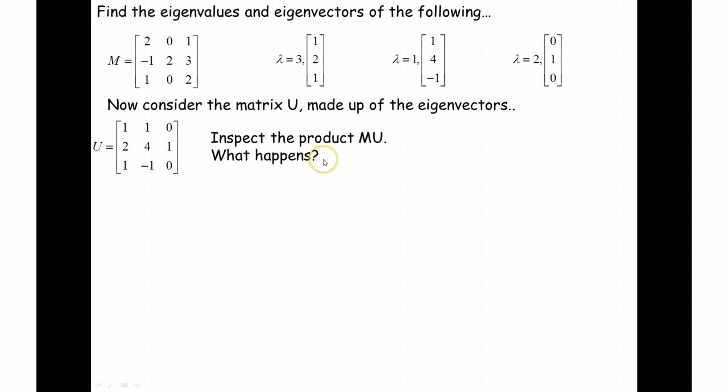If you managed to do that, what you should have got when you've worked out the product MU is this matrix here. Hopefully you will have spotted how this is related to our eigenvectors here. And each of these columns here are our eigenvalue multiplied by our eigenvector.